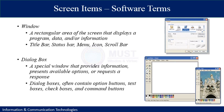To conclude the discussion about software, we define some software screen terms. A window is a rectangular area of the screen that displays a program, data, or information. It can include a title bar, status bar, menu icons, and scroll bars. There are also small windows called dialog boxes, which show a special window that provides information, presents available options, or requests a response. Dialog boxes often contain option buttons, text boxes, check boxes, and other command buttons.